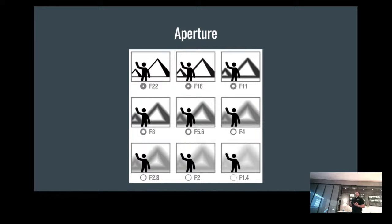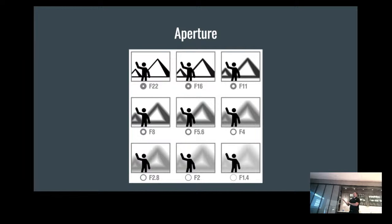When we read a lens that says 50mm f1.4, that means the maximum — the lowest — we can go is f1.4. We can go all the way up to f22, giving us more background, more relationship between the two, or we can blur the background if that's the effect we're going for. We can also look at f8, f5.6, f4, where we can still kind of see the background but still get blur effects.